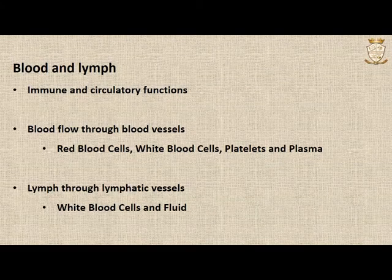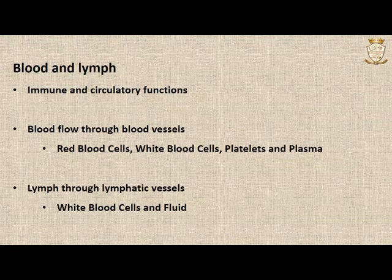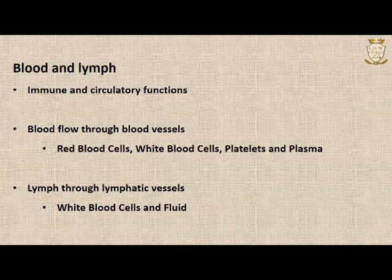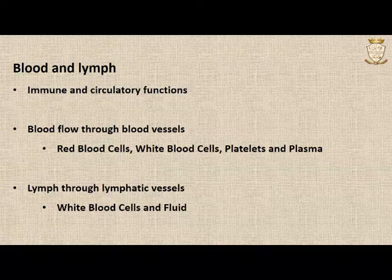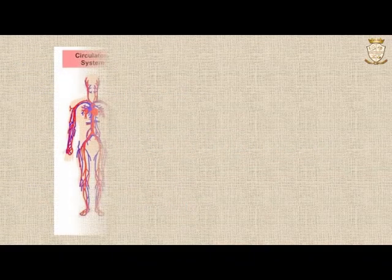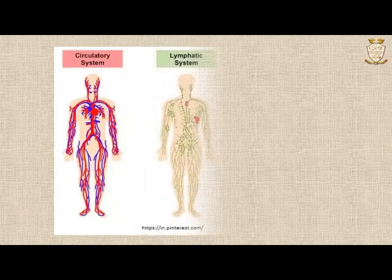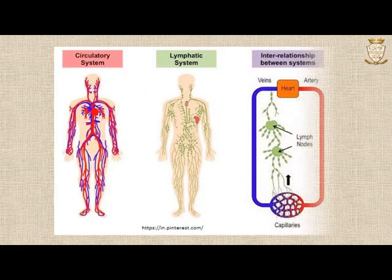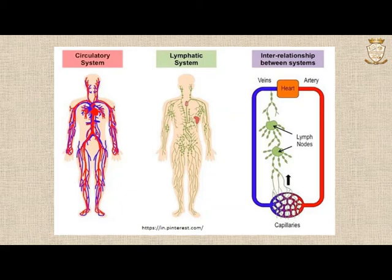Blood contains red blood cells, white blood cells, platelets and plasma, and it flows through blood vessels. Lymph flows through lymphatic vessels and it contains white blood cells in a plasma-like fluid. In this image we can see the circulatory system through which blood flows. The second image is the lymphatic system and the third one shows the interrelationship between these two systems. Blood flows through arteries, veins and capillaries and their flow is forced by the pumping action of the heart.